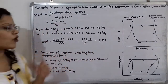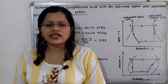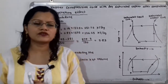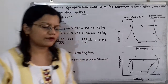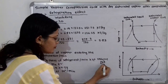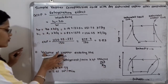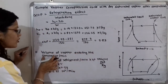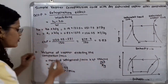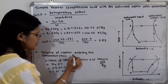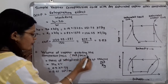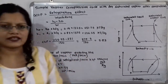Next, we calculate the volume of vapor entering the compressor per minute. The specific volume is given in meter cube per kilogram. We need to find the answer in meter cube per minute.